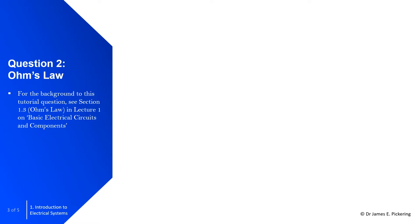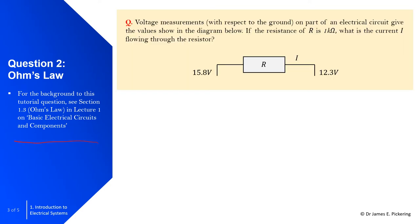Question two is on Ohm's law. If you're struggling with some of the background to this question, see section 1.3 on Ohm's law from lecture one. In this question, we've got a configuration of an electric circuit where we've got voltages measured here and here. We have a voltage difference between either end of this resistor, where the resistor has a value of one kilohm. What I'm asking is to determine what the current denoted I is that's passing through the resistor.